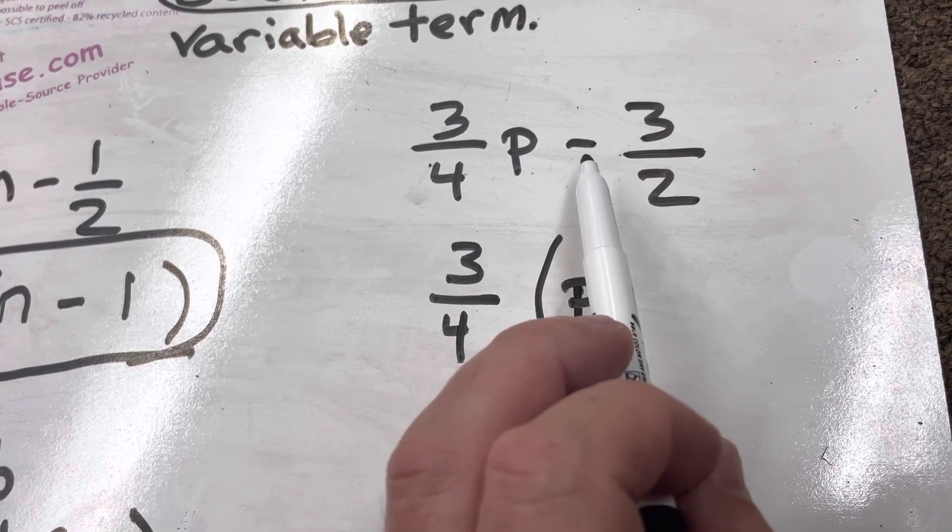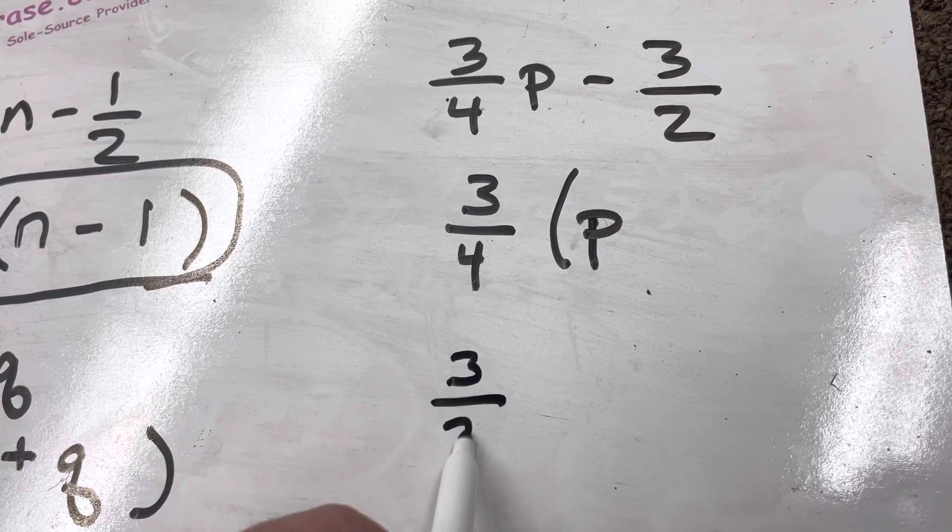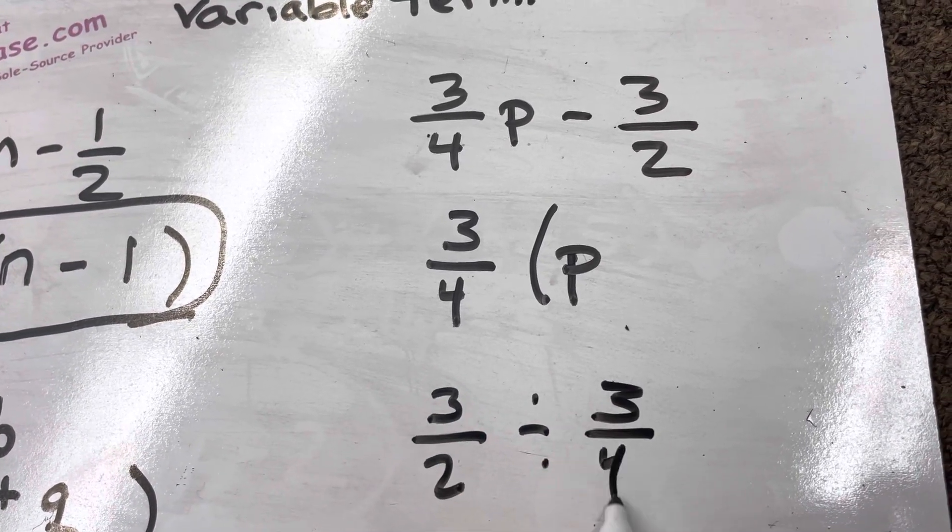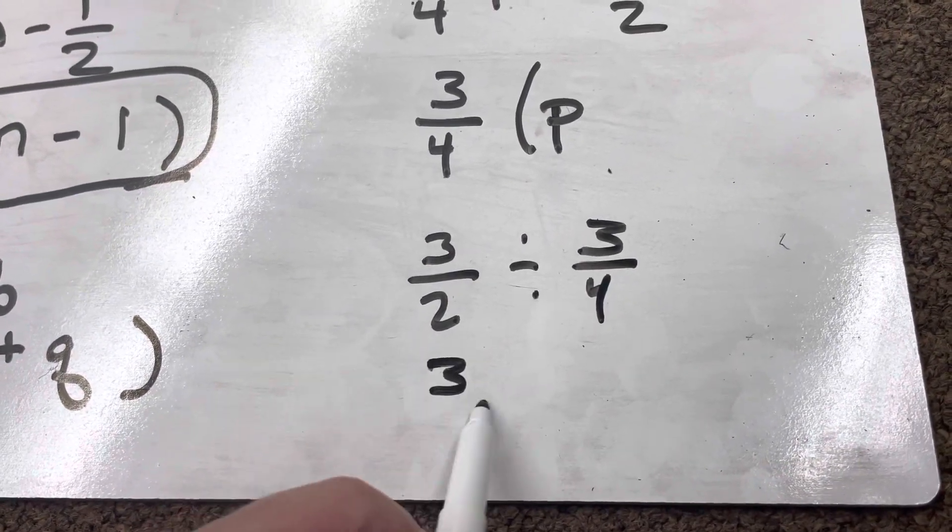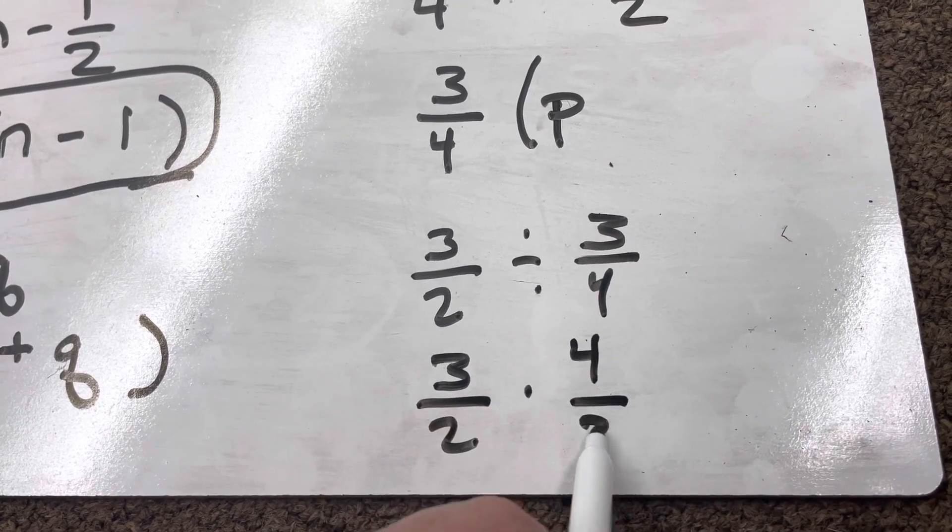Now I have to take this 3 over 2 and divide it by 3 fourths. I'll worry about the negative later. I'm going to need to remember that. But I have to take 3 over 2 and divide that by 3 over 4. Well, I know that that has to become a multiplication problem. 3 over 2 times 4 over 3.